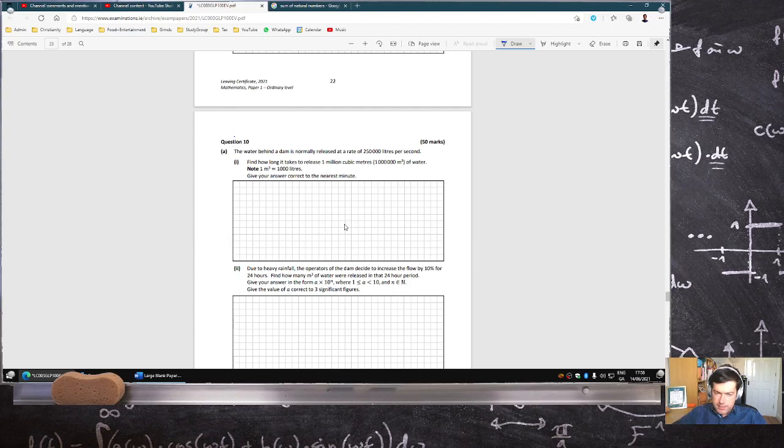So it'll be 1 times 10 to the 6 times 10 to the 3 over 250,000. 10 power 9 divided by 250. That's seconds. So that would be in minutes to the nearest minute, 67 minutes.